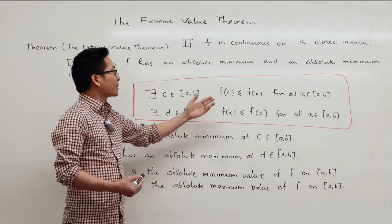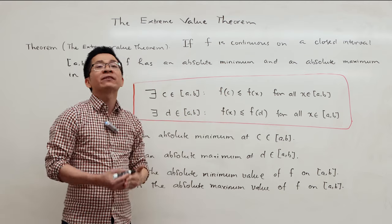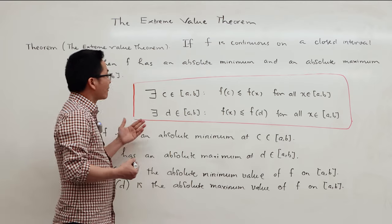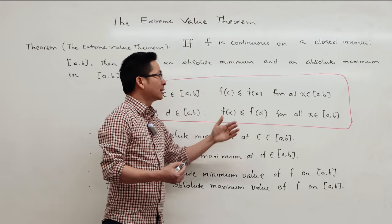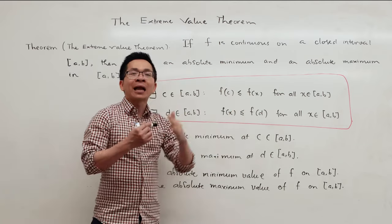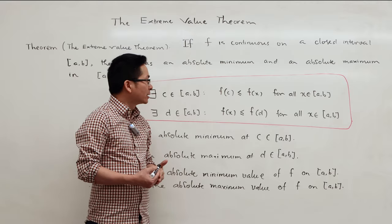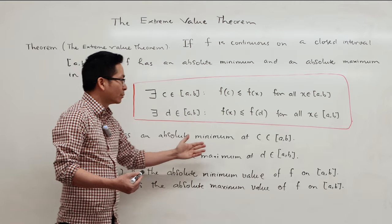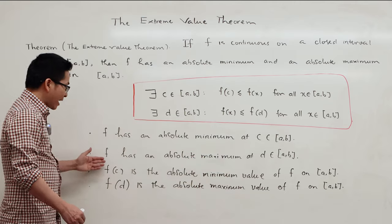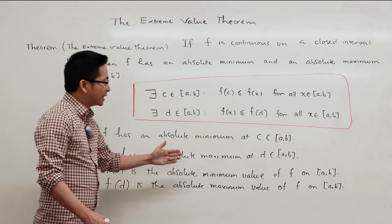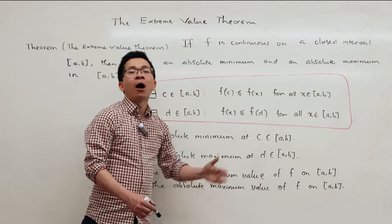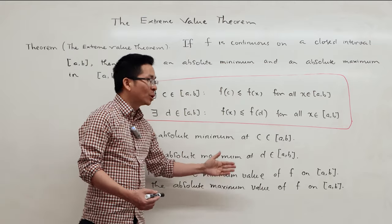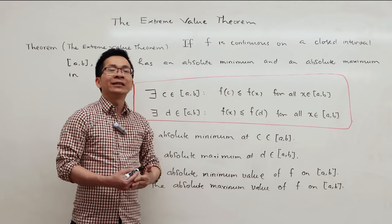In this case, f of c is the smallest function value on the interval ab, and we say that f has an absolute minimum at c. And f of d is the largest function value on the interval ab, and we say that f has an absolute maximum at d. We also say that f of c is the absolute minimum value of f on the interval ab, and f of d is the absolute maximum value of f on the interval ab.